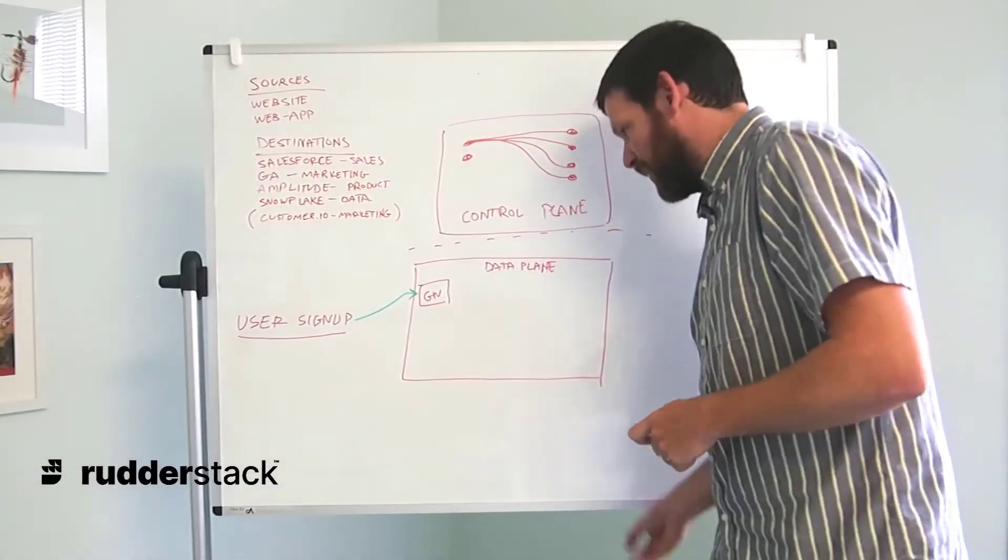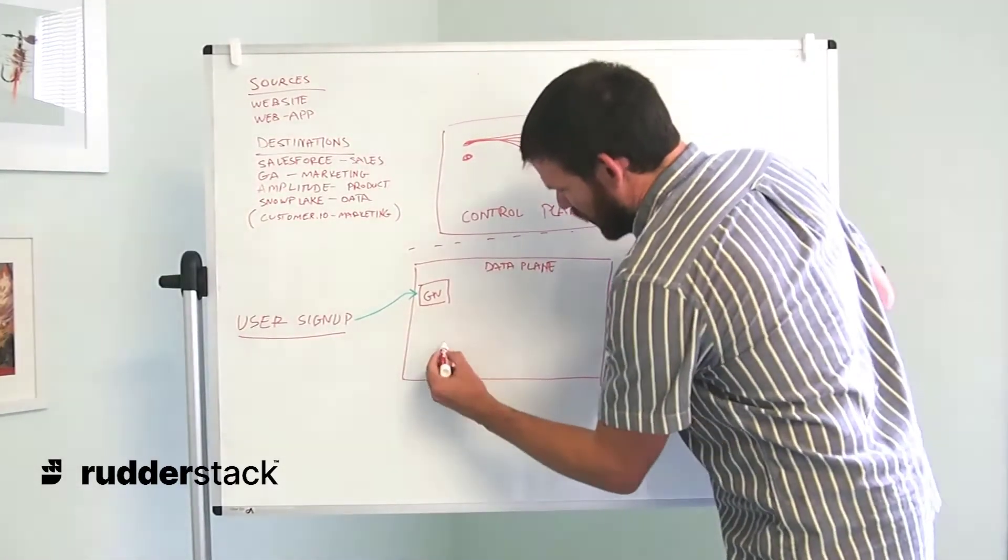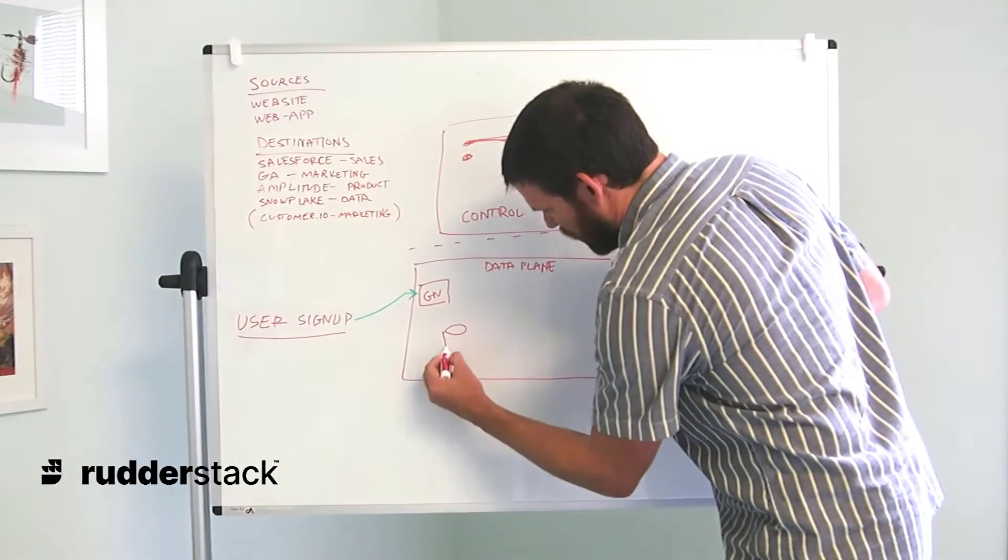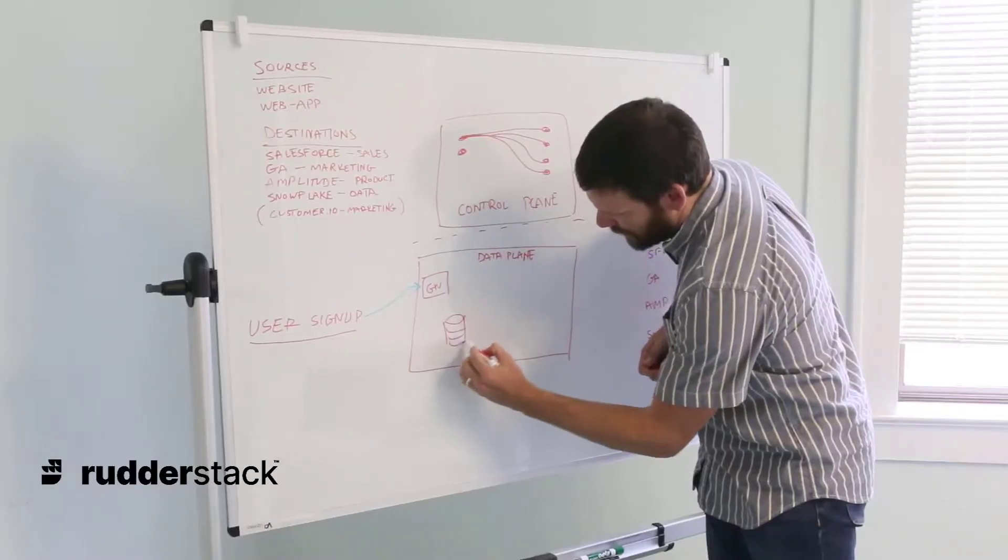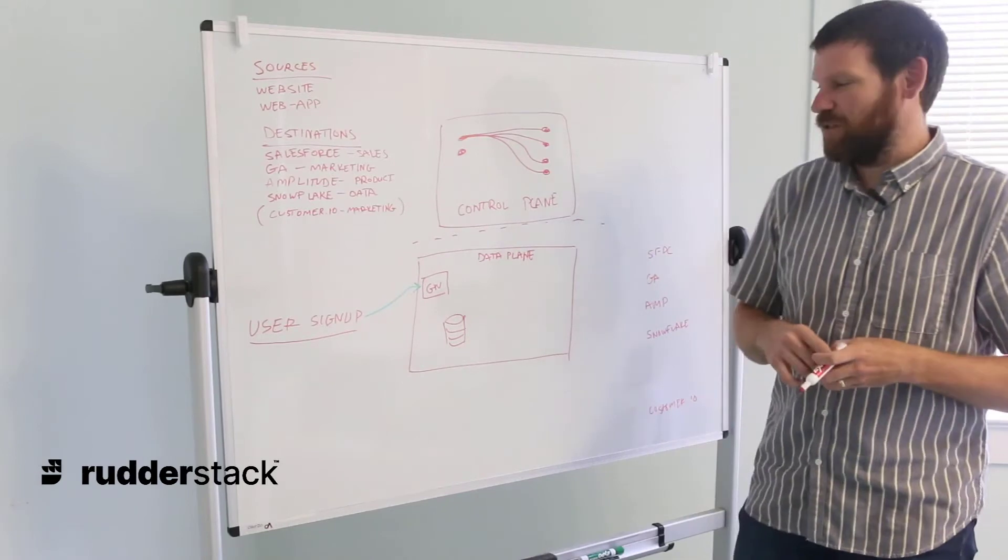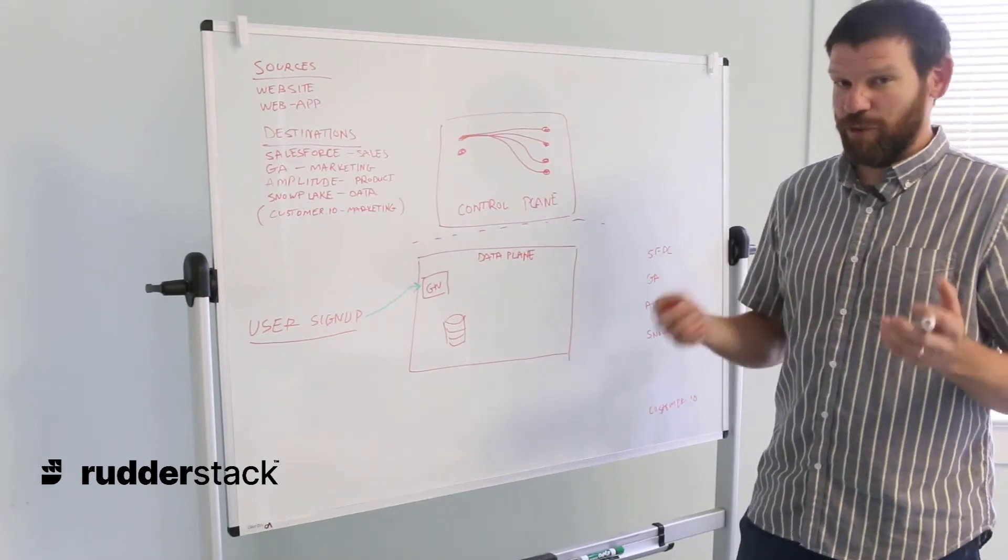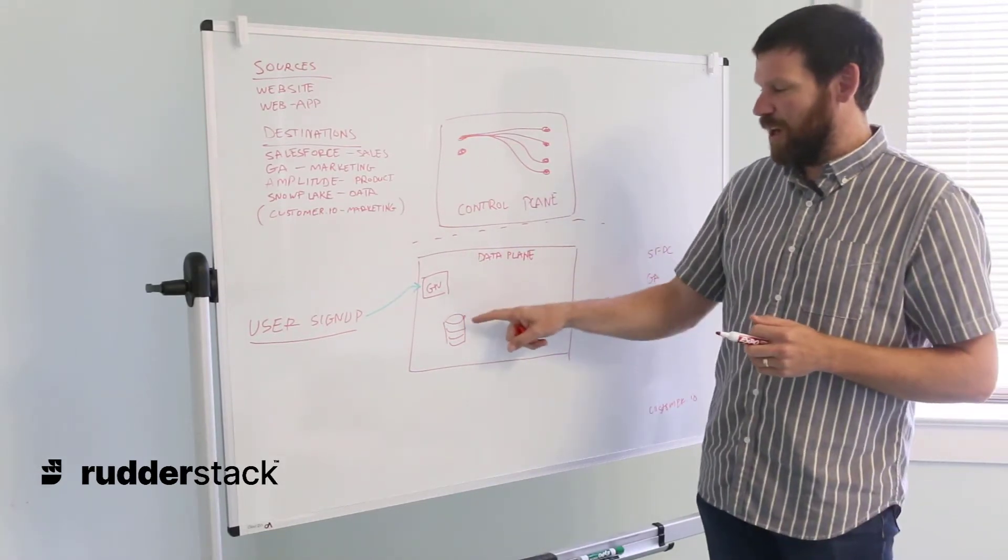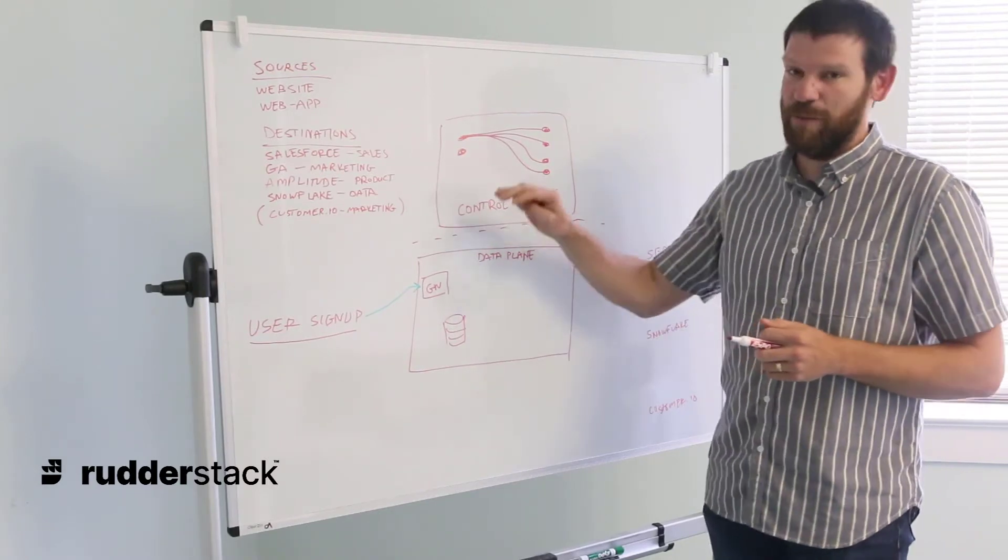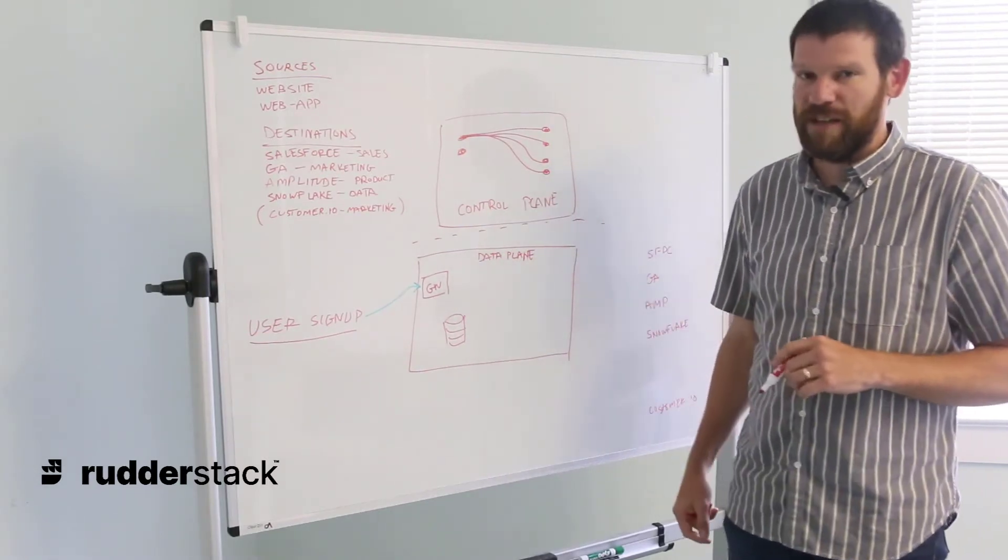When events get to the gateway, the first thing that's going to happen is they're stored in a Postgres database. You may be thinking, I thought RudderStack didn't store my event data. We don't store it long term, but we do persist it long enough to process it and send it to the downstream tools. Eventually these tables are dropped completely, so we have no record of the data.